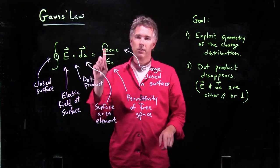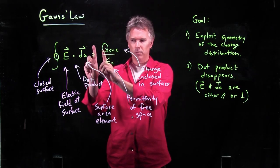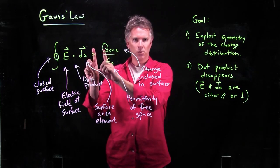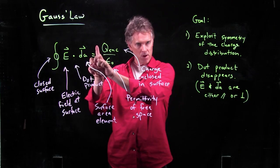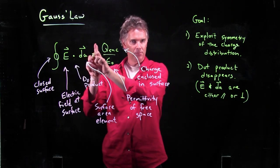If they are parallel, then E dotted with dA, remember, dot product would become E dA cosine theta. Theta would be zero, and so that cosine term goes away. Just becomes a one.